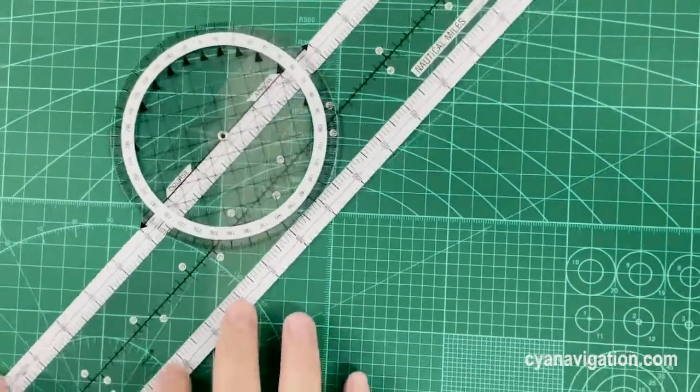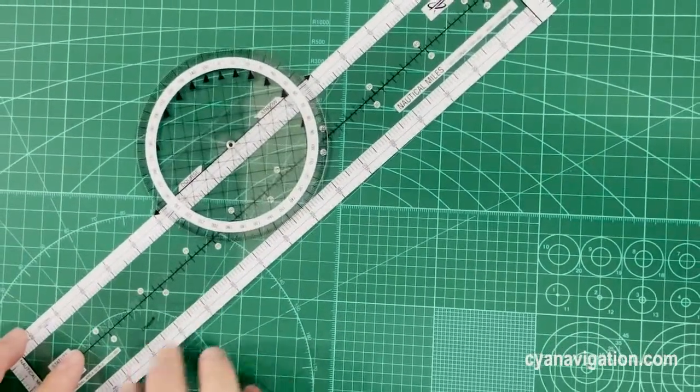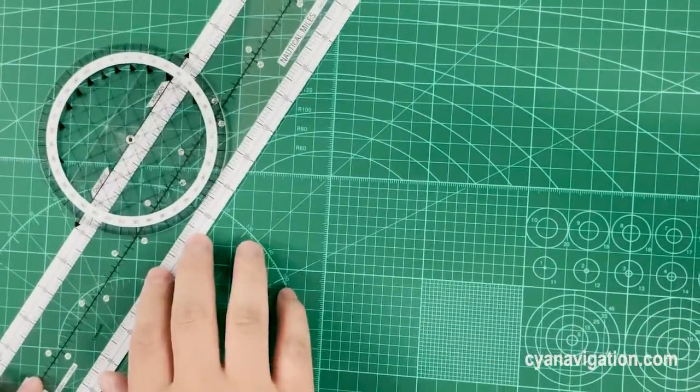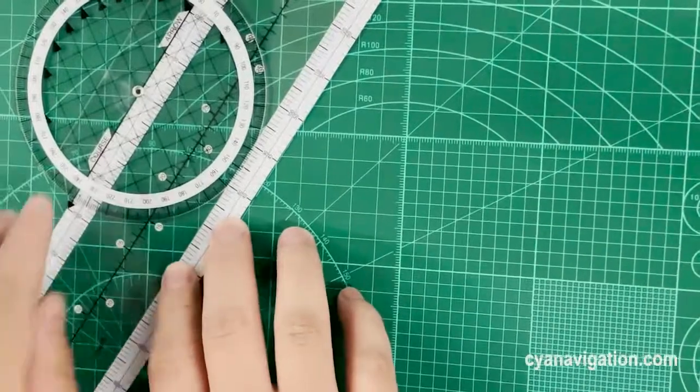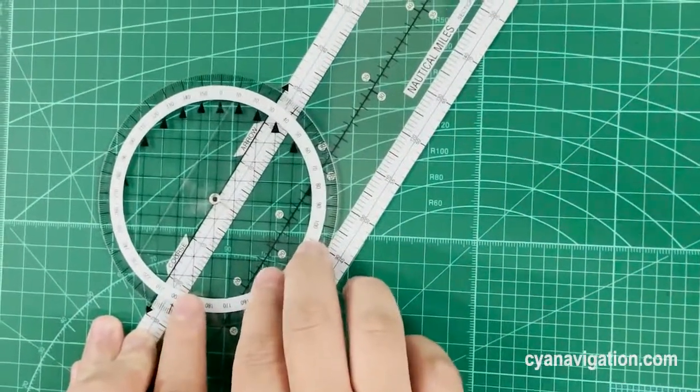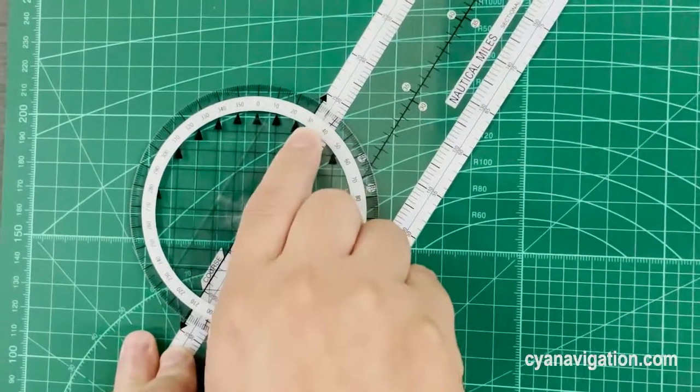Another example is if we move the lines here or here, just need to rotate the plotter again and read the angle here.